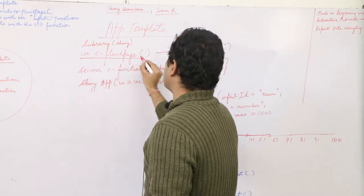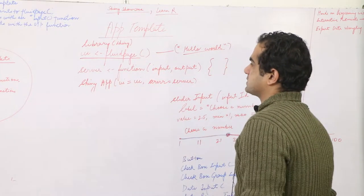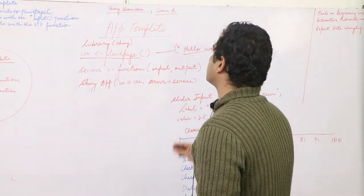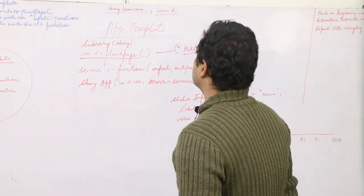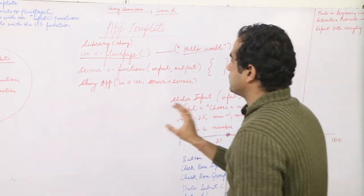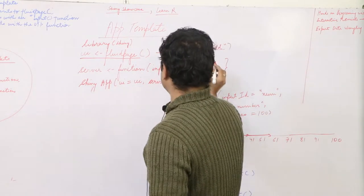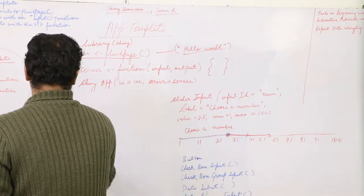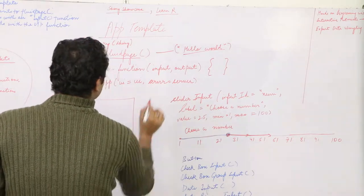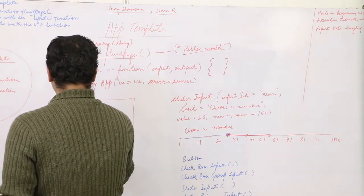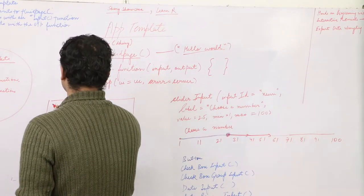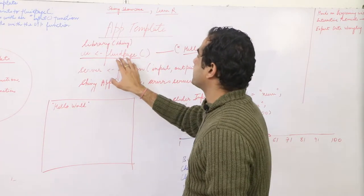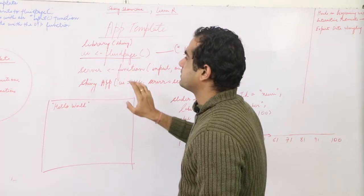This is the fluid page part of it, where you can render the input and output functions. I recommend using this fluid page wherever you want to make any entry to the web UI page. For example, if you write 'hello world' in there, it will be displayed as the server listens to it. Whatever inputs you are defining need to be defined in the fluid page part.